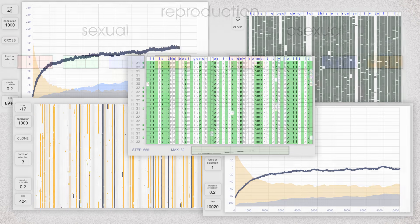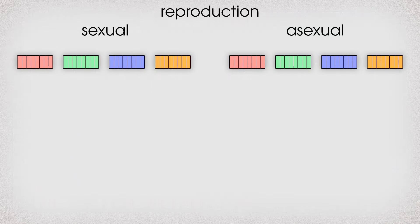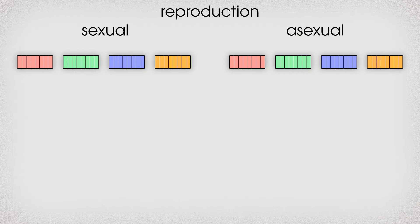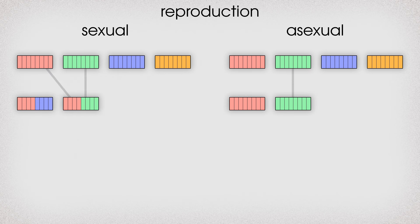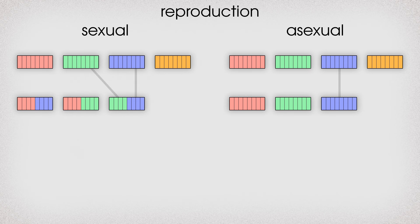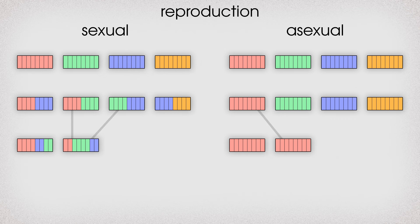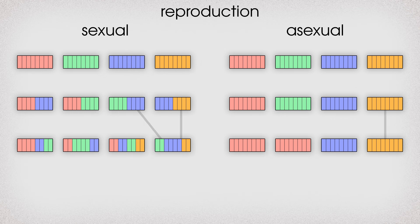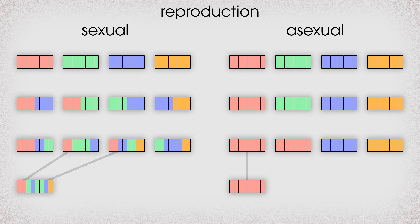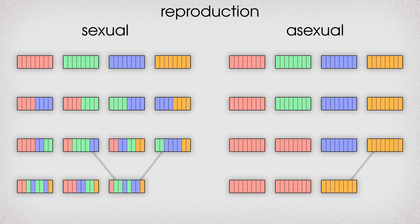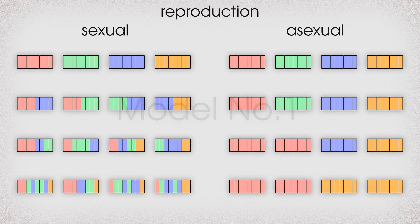In the models, I will use the following terms. Sexual reproduction: reproduction with genetic recombination between two organisms. This means a new organism receives each of its genes from one of its parents. Asexual reproduction: reproduction by copying itself — for example, cell division, gemmation, cloning, etc.